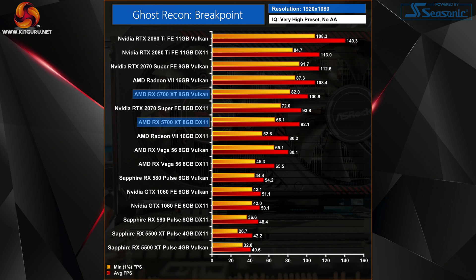As for AMD's flagship Navi GPU, the RX 5700 XT, there is still a definite improvement by switching the API, but it's not as large as those Nvidia cards — Vulkan improves average frame rates by just under 10%, though the one percent lows improved by 24%, which is still very significant. AMD's Radeon VII, on the other hand, sees the single biggest improvement by making the switch to Vulkan, with average frame rates improving by a whopping 35%. It was clearly being held back significantly by DX11, and with Vulkan we are seeing a very significant performance uplift.